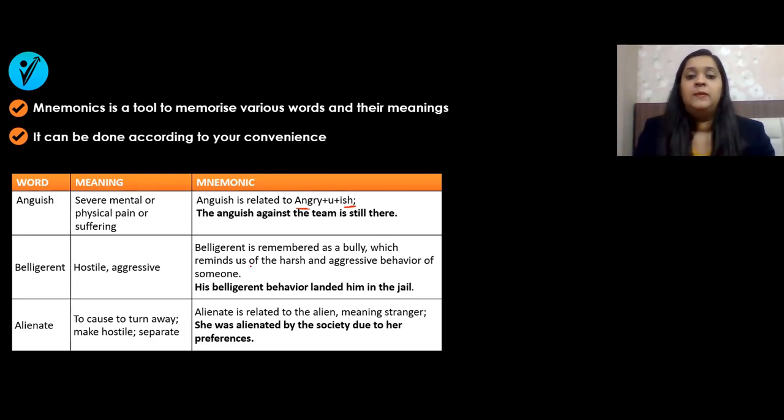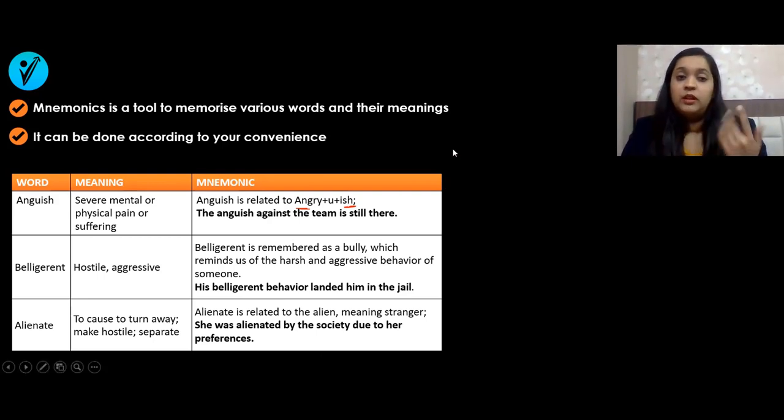His belligerent behavior landed him in jail. Alienate: 'alien' meaning stranger. She was alienated by the society due to her preferences. Alien means foreign, someone from the outside or different from us. Alienate means the process of removing someone from a group. You can use these mnemonics to memorize certain words.